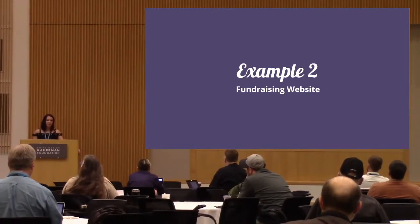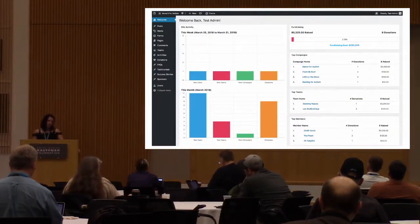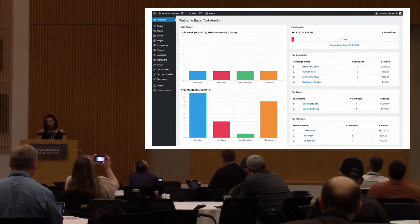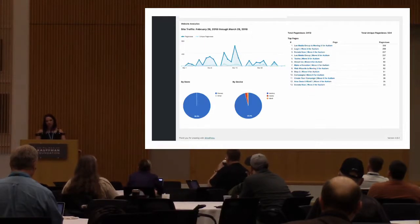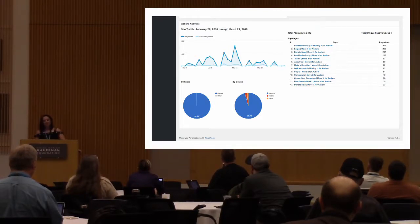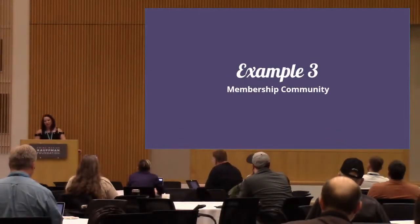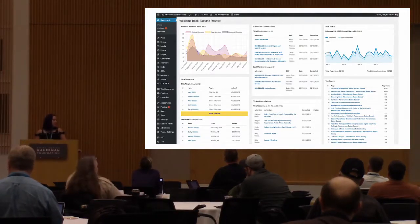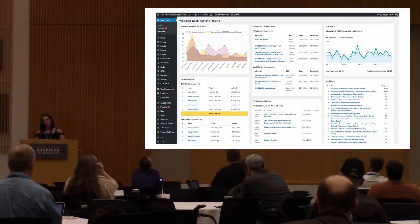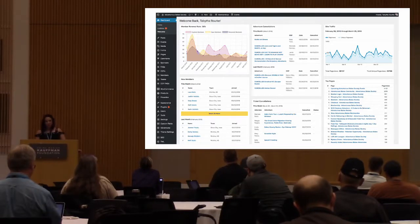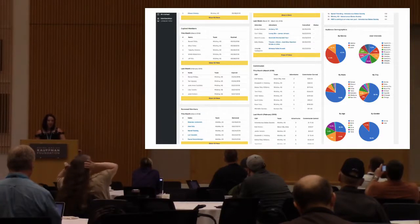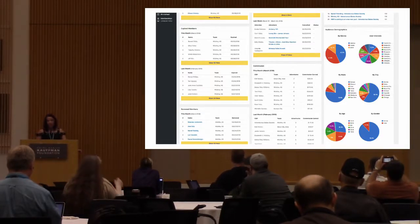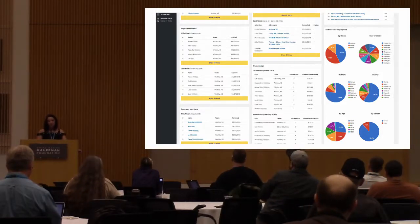The next example is a fundraising website where users sign up and create their own campaigns to raise money. Their dashboard allows them to see how many new users and new teams have signed up each month and how much money has been raised overall. They also have some analytics data — the website hasn't quite launched yet, but once they've started getting traffic it'll update automatically. The last one is a bigger membership site that has a ton of data, breaking down things by member, events statistics, demographic data for targeting sponsors, and commission tracking.